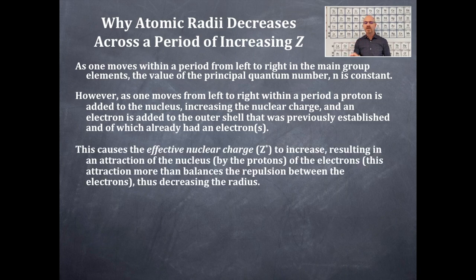This causes the effective nuclear charge Z* to increase, resulting in an attraction of the nucleus by the protons of the electrons. This attraction more than balances the repulsion between the electrons, thus decreasing the radius.